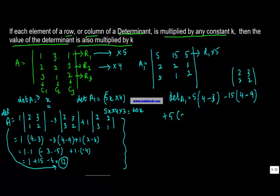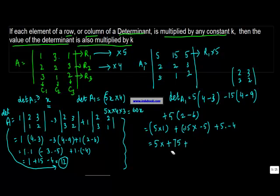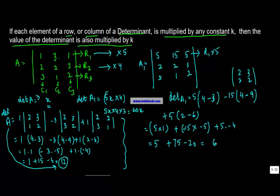So you get 5 into 1 minus 15. Plus minus 15 into 4 minus 9 gives you minus 5. Plus 5 into 2 minus 6 gives you minus 4. Minus 5 into 4, so you get 5 plus minus 15 into minus 5, 75, plus... actually minus 5 into minus 4, so you get minus 20, which is equal to 60 minus 20.